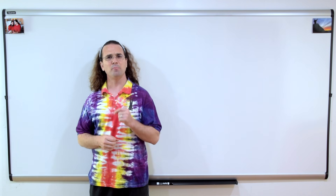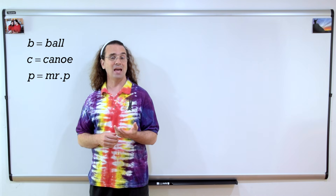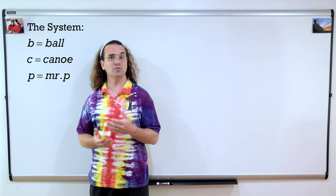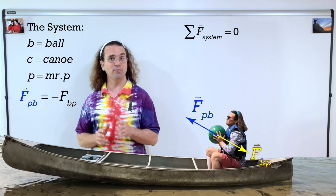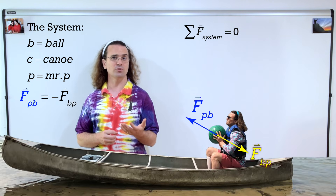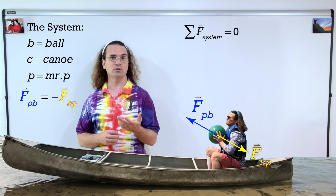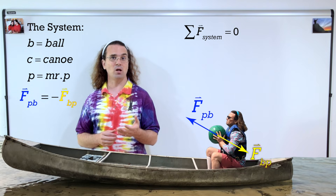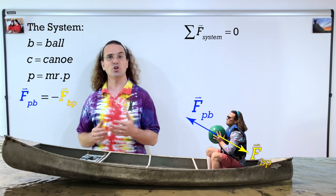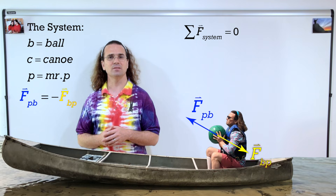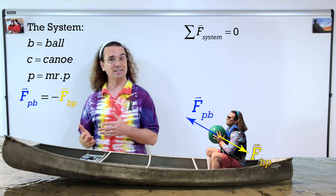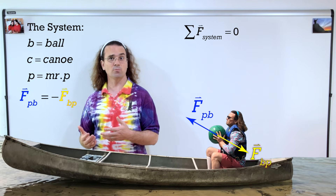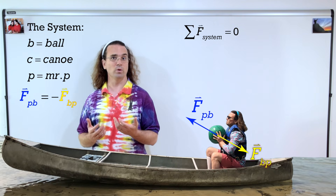Well, first off, let's define the ball, the canoe, and me as the system. Notice that the net external force acting on the system is zero. I apply a force on the ball and according to Newton's third law, the ball applies an equal but opposite force on me. But those two forces are internal to the ball-canoe-Mr. P system. Therefore, there is no net external force acting on the system. If there is no net external force acting on the system, the system does not accelerate. Because the system was initially at rest, the system will remain at rest.